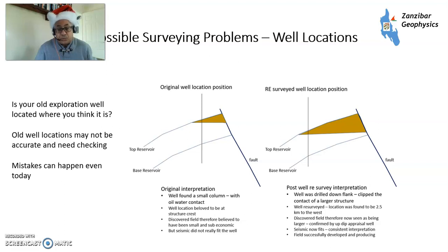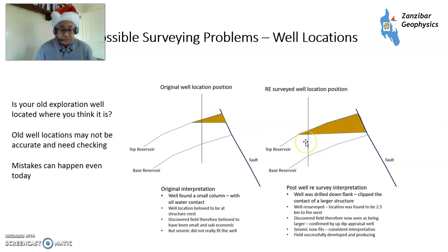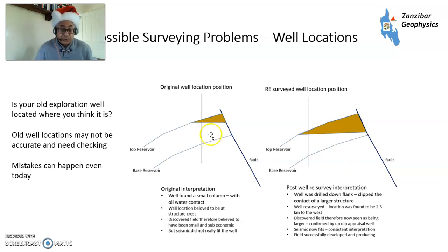Now, what could possibly go wrong? One thing is that the well isn't where you think it is. This is an example from the North Sea where originally people thought they had drilled the well at the crest of the structure, but the seismic never quite fitted the well very well. The well had a contact, and they thought they had a small accumulation at the top that wasn't economic. Then somebody rechecked the well location and found that the well was drilled about two and a half kilometers to the west — quite a way down dip — with all this updip hydrocarbon remaining. An appraisal well was drilled updip, confirmed it, and the field was developed quite a bit later.